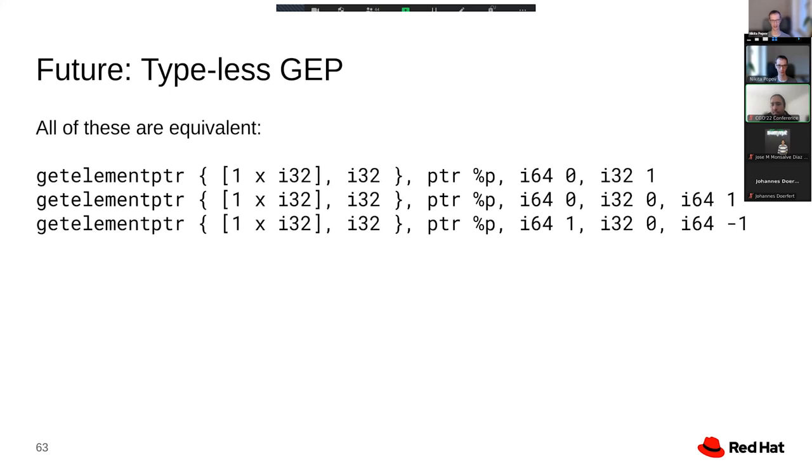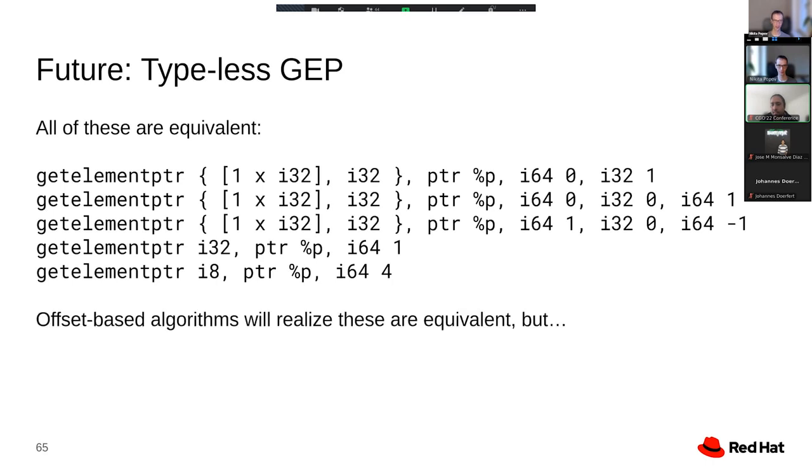I've shown this example before, which is three different get element pointer instructions, all encoding the same address. And these are still using the same source element type. If we also change the source element type, we actually have even more different ways to encode the same offset. Extra examples are using an i32 source element type and then another one using an i8 type and instead multiplying the index by four. All of those are equivalent.